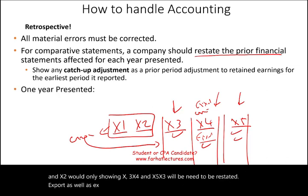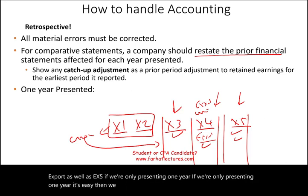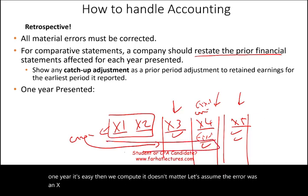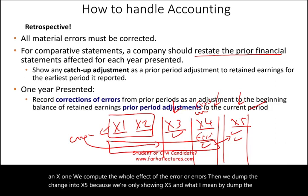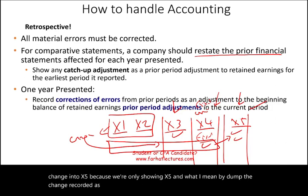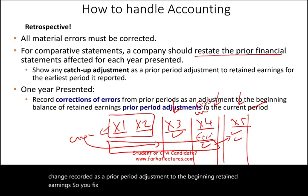If we're only presenting one year — say X5 — and the error was in X1, we compute the total effect of the error and record it as a prior period adjustment to beginning retained earnings. So you fix beginning retained earnings for that one year presented, and the problem is solved.